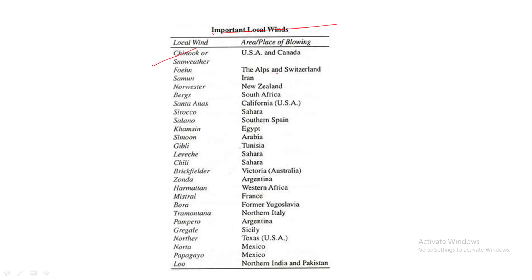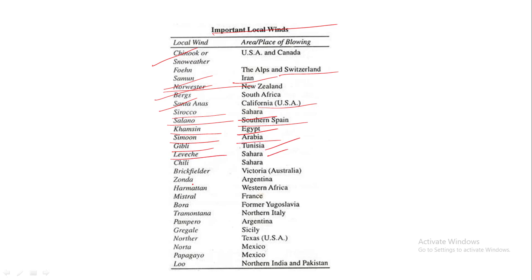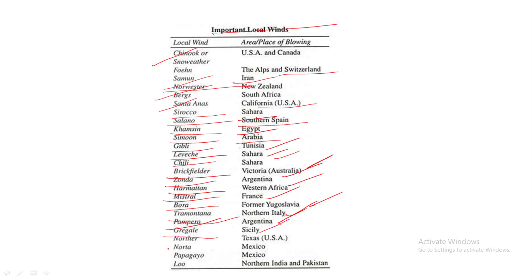Foehn in the Alps and Switzerland; Samoon in Iran; Nor'wester in New Zealand; Berg winds in South Africa; Santa Ana in California, USA; Sirocco in the Sahara; Solano in southern Spain; Khamsin in Egypt; Simoom in Arabia; Ghibli in Tunisia; Leveche in the Sahara; Chili in the Sahara; Brickfielder in Victoria, Australia; Zonda in Argentina; Harmattan in western Africa; Mistral in France; Bora in former Yugoslavia; Tramontane in northern Italy; Pampero in Argentina; Gregale in Sicily; Norther in Texas, USA; Norte in Mexico; Papagayo in Mexico; and Loo in north India and Pakistan.